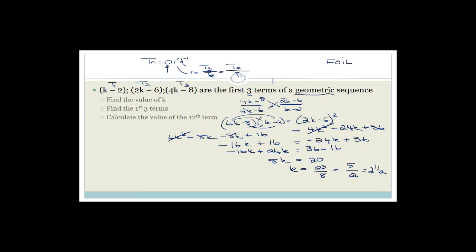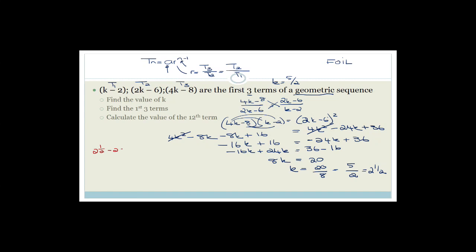Now that k equals 5 over 2, we find the first three terms by substituting back. The first term is 2 and a half minus 2, which equals a half. The second term is 2 times 5 over 2 minus 6 — the 2s cancel — giving 5 minus 6, which is minus 1. The third term is 4 times 5 over 2 minus 8, the 4 and 2 cancel to give 2 times 5 is 10 minus 8, which is 2. So the first three terms are a half, minus 1, and 2.